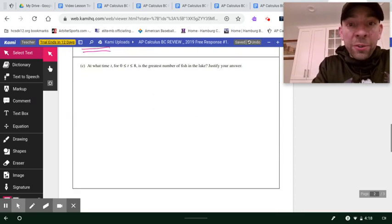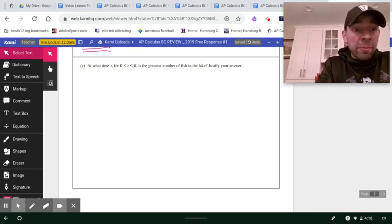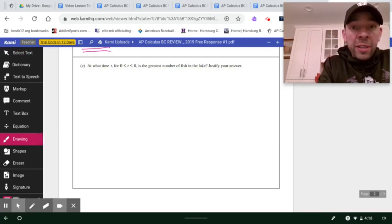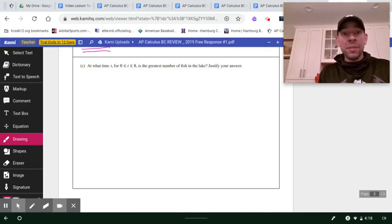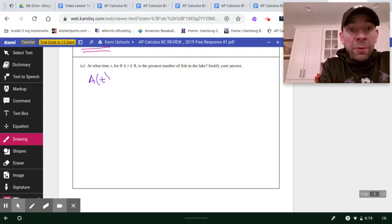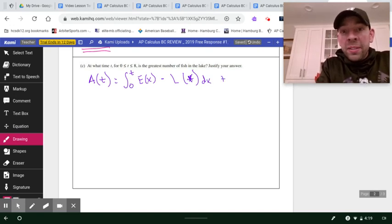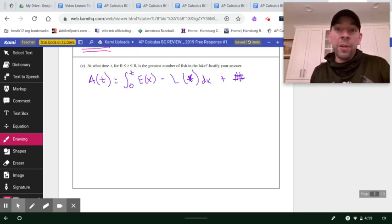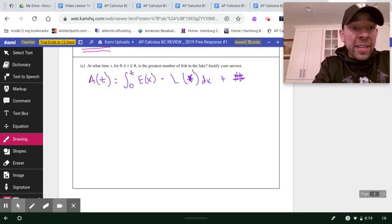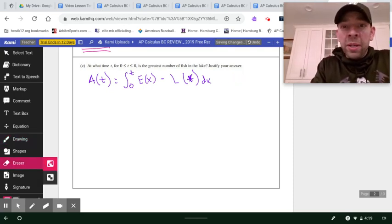In Part C, what is the greatest number of fish in the lake? We're looking for an absolute maximum value. The first thing I'm going to try to do is create a function that models the number of fish in the lake at any time T. So I'm going to use the function A of T, A for the amount of fish. It's going to be the integral from 0 to T of the number of fish that have entered the lake, E of X, minus the number of fish that have left the lake, L of X, DX. Normally I would have plus some random number here that would take into account how many fish there were initially at T equals zero. But if we said that the lake is empty at T equals zero, then we don't have a number here.